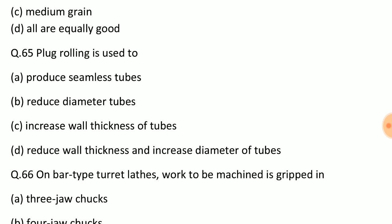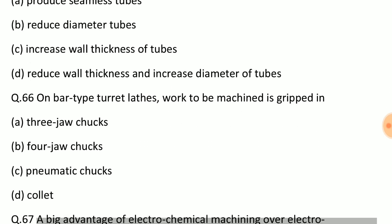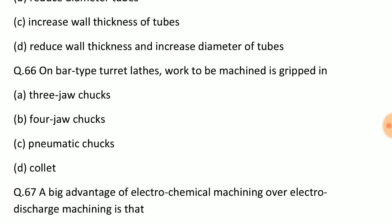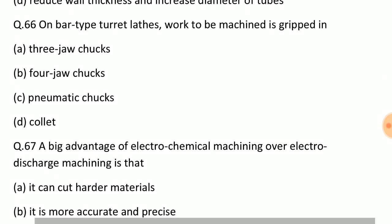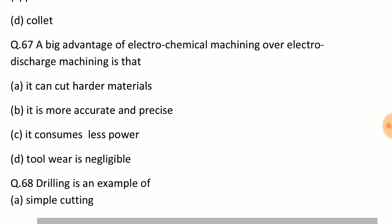Question: Plug rolling is used to? Answer: Option D, reduce wall thickness and increase diameter of tubes. Question: On bar type turret laths, work to be machined is gripped in? Answer: Option D, collet. Question: A big advantage of electrochemical machining or electro discharge machining is that? Answer: Option C, tool wear is negligible.